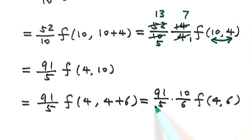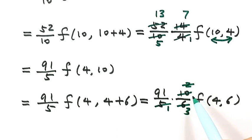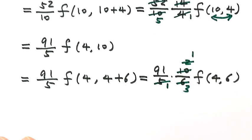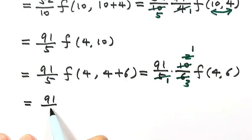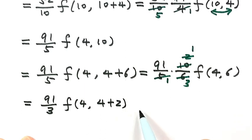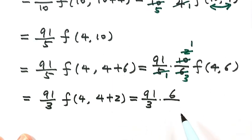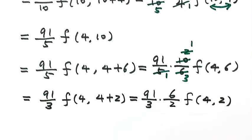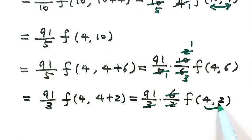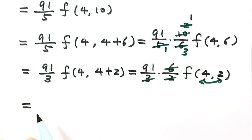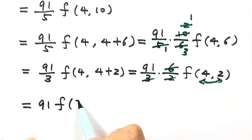Simplifying the accumulated fractions: the 3s and 2s partially cancel, leaving 91 over 3. Then we write 6 as 4 plus 2 and apply Identity 4 again, giving (6/2) times f(4, 2). The 6s cancel, leaving the coefficient as 91. We then swap using Identity 2 to get f(2, 4), giving us 91 times f(2, 4).